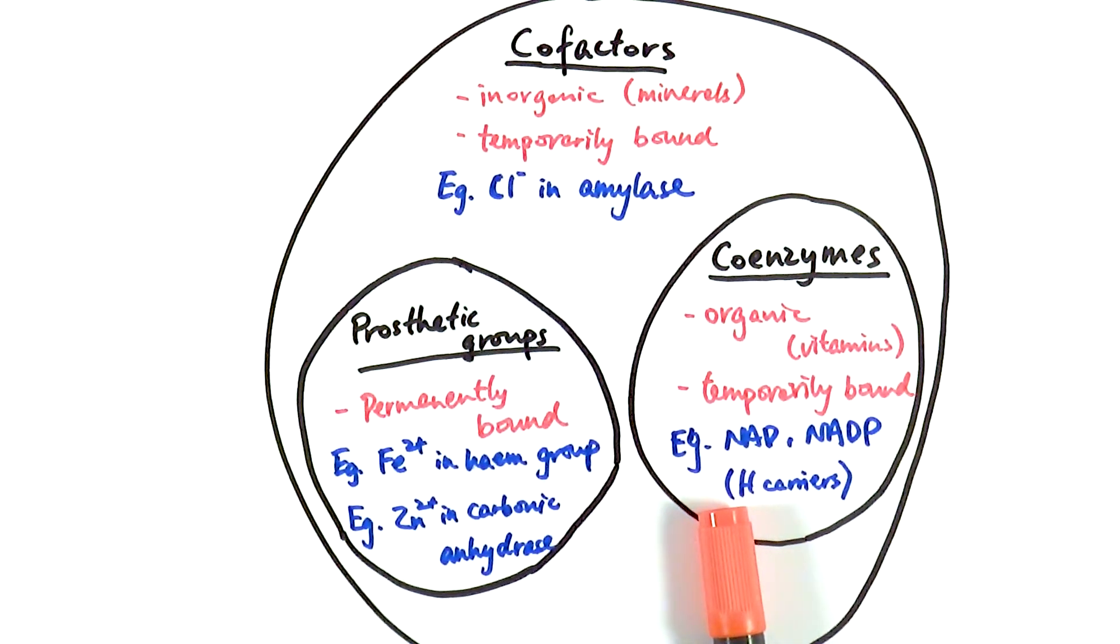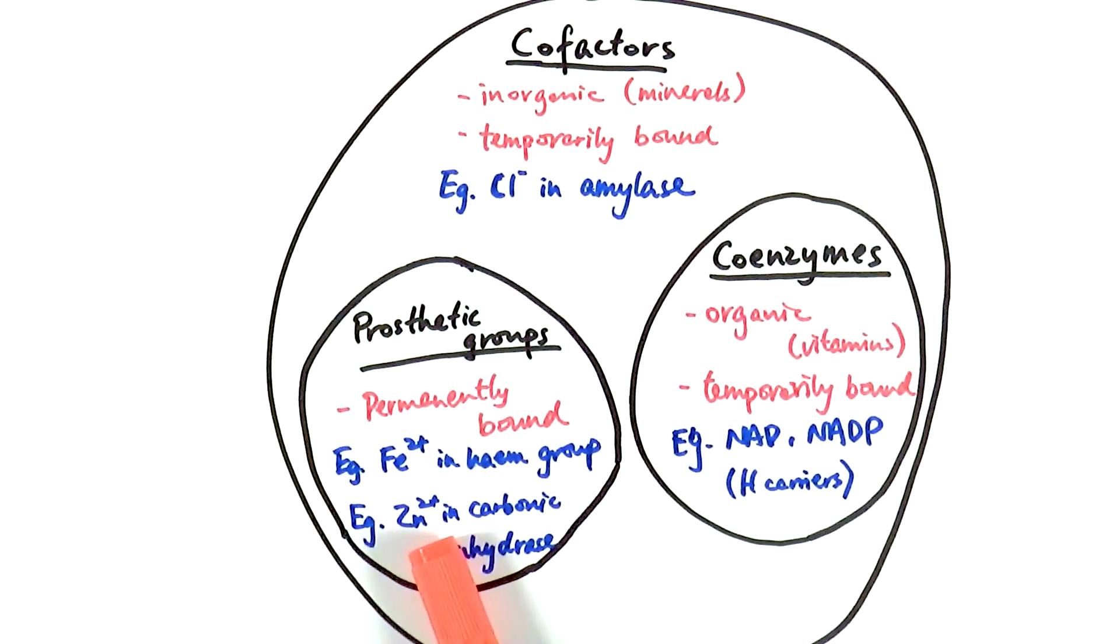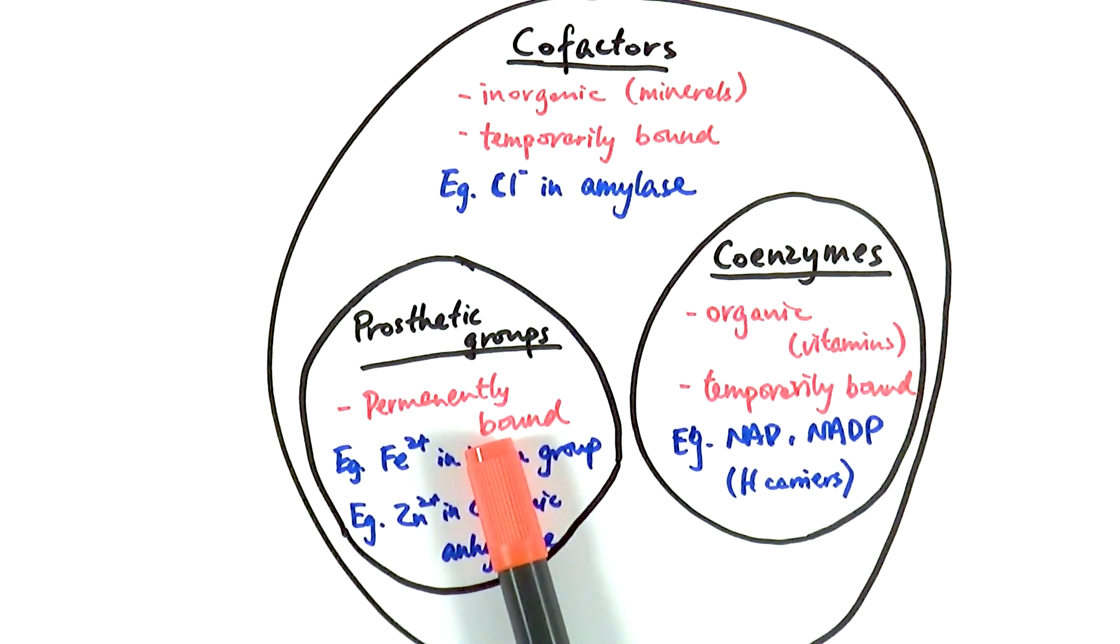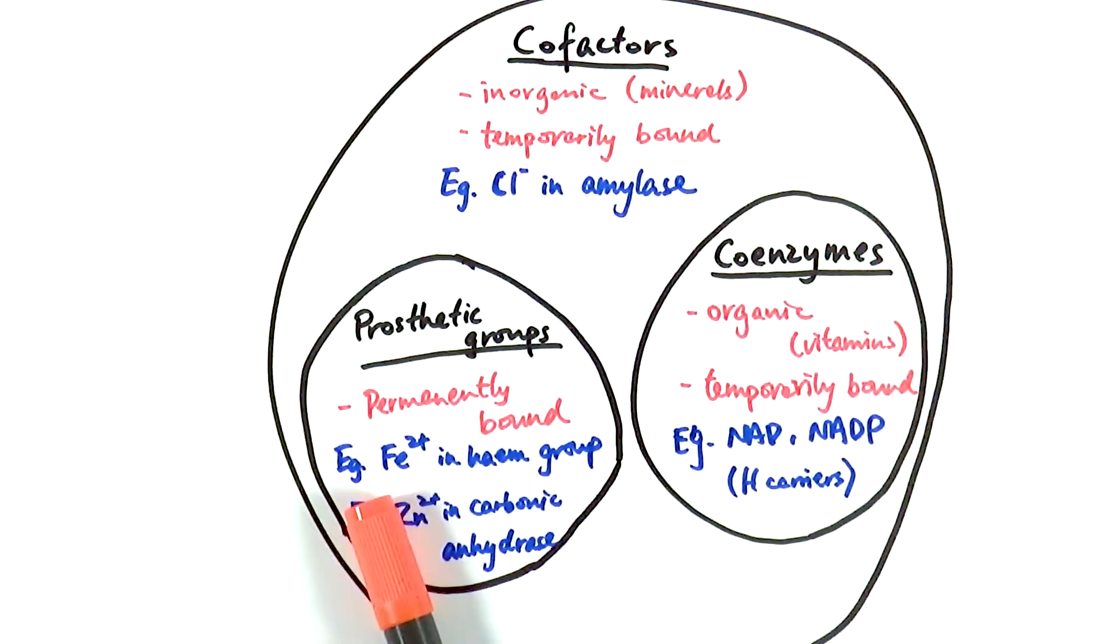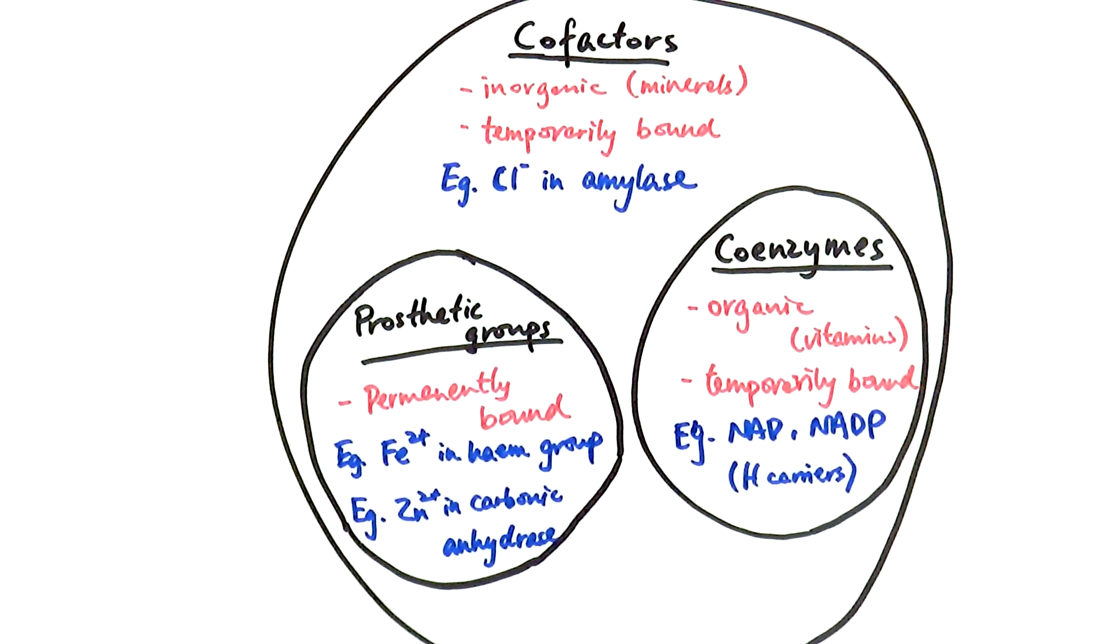which act as hydrogen carriers in respiration and photosynthesis. The third type is the prosthetic groups, which are cofactors again, but they are permanently bound in the actual enzyme and the protein. Examples will be things like iron ion in the heme group inside hemoglobin, which is responsible for transporting oxygen, particularly.